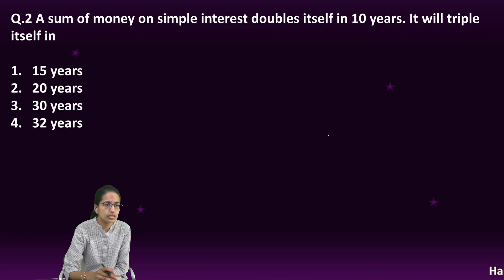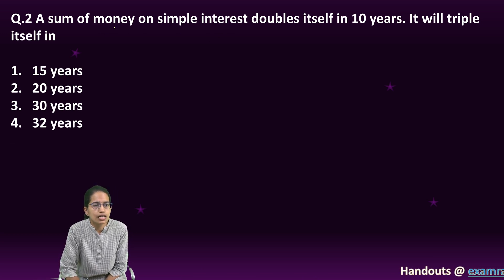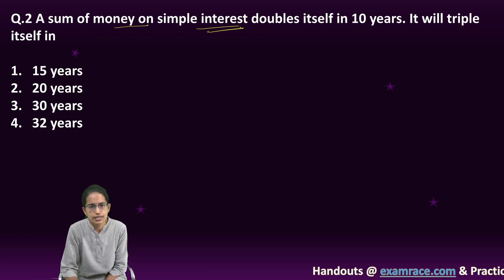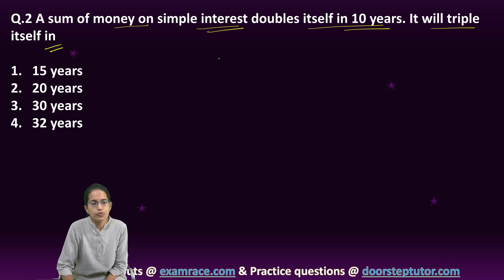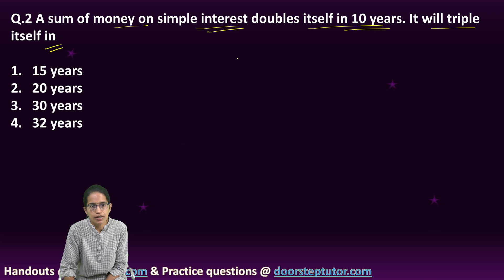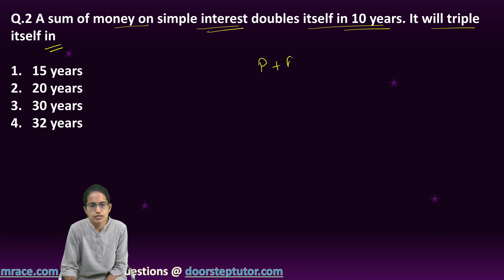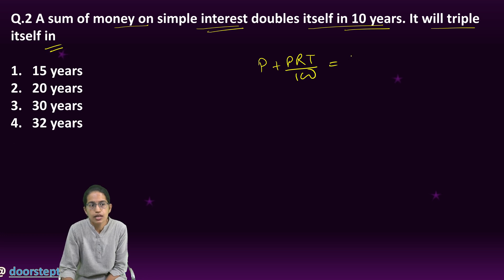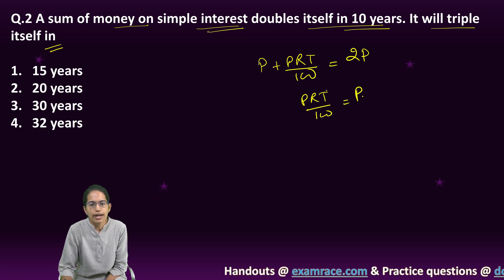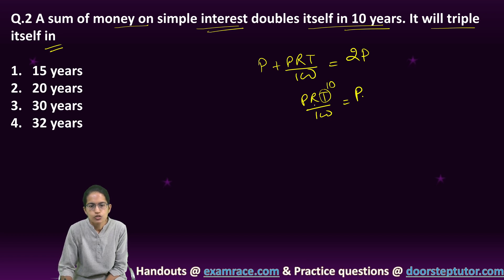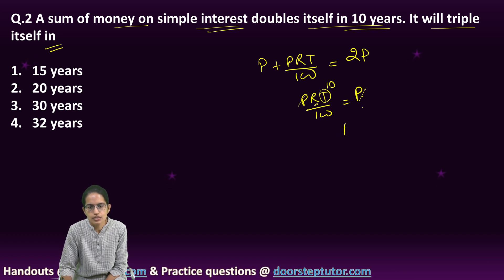The next question: a sum of money on simple interest doubles itself in 10 years. So the principal plus simple interest (P + PRT/100) would be double, that is 2P. So PRT/100 equals P. My time is 10, so I can calculate the rate — P and P cancel, giving a rate of 10 percent.